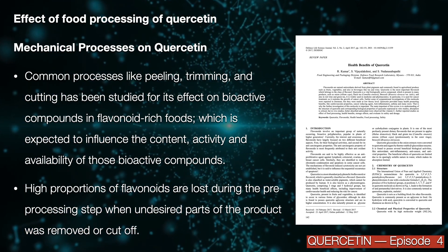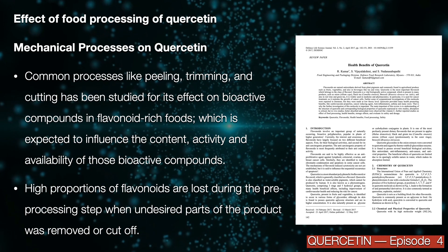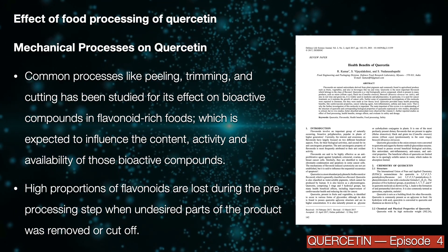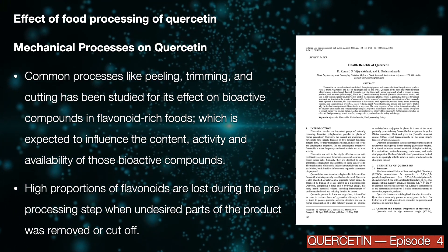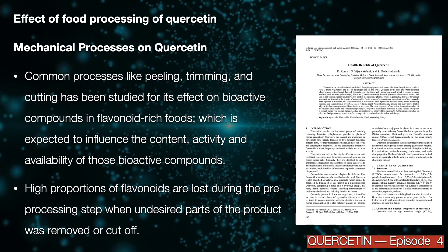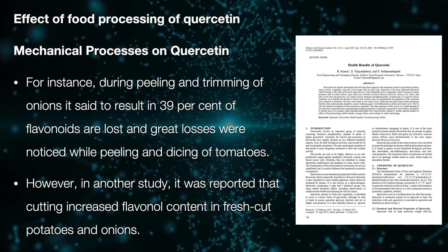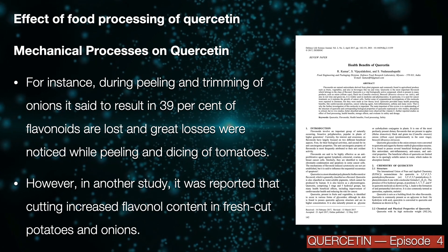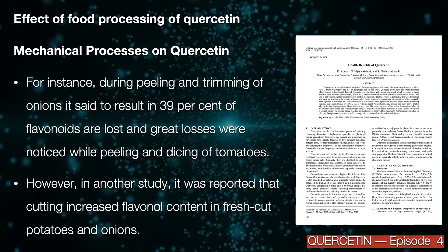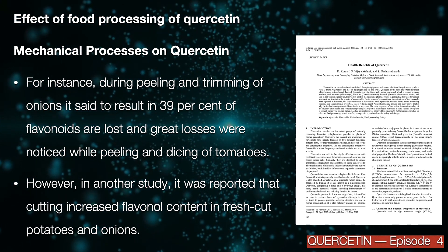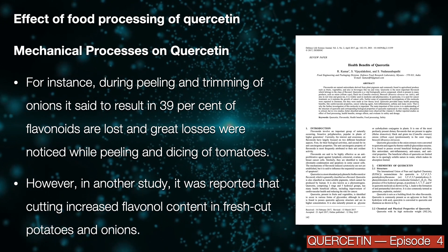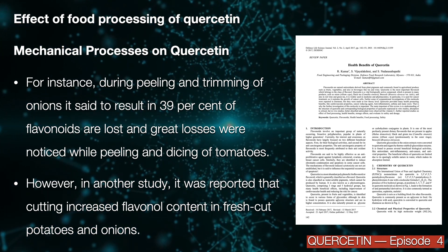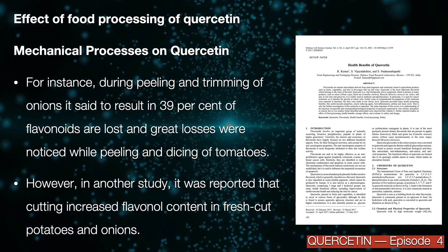High proportions of flavonoids are lost during pre-processing steps when undesired parts of the product are removed or cut off. For instance, during peeling and trimming of onions, it is said to result in 39% of flavonoids being lost, and greater losses were noticed while peeling and dicing of tomatoes.